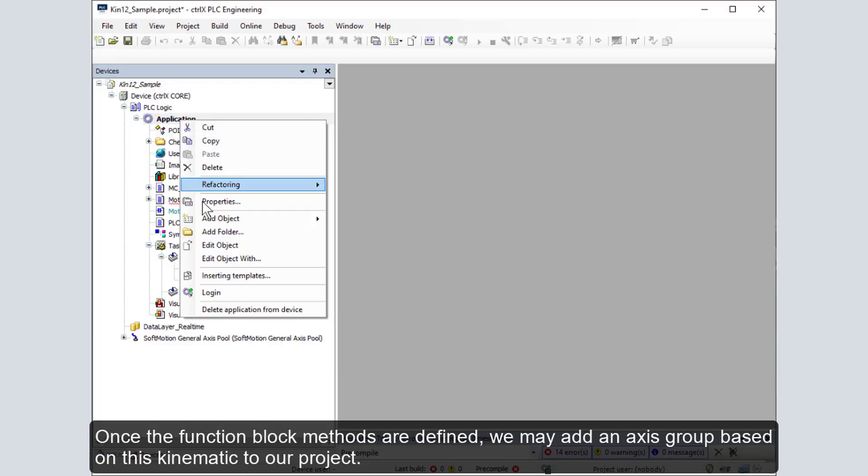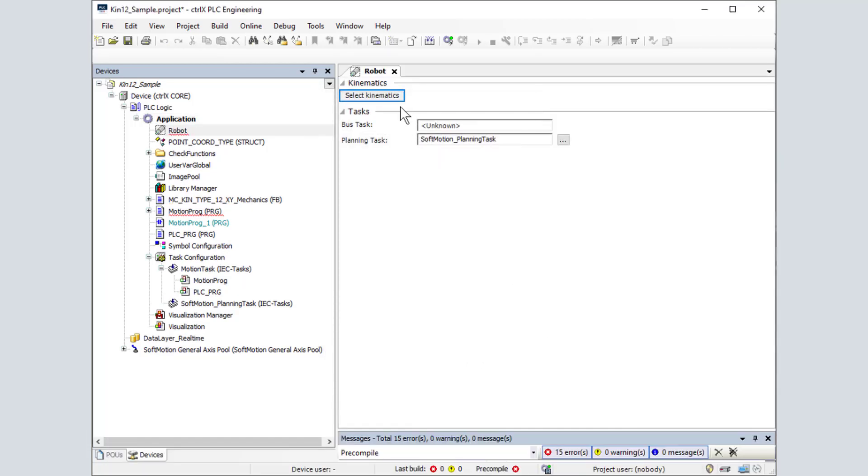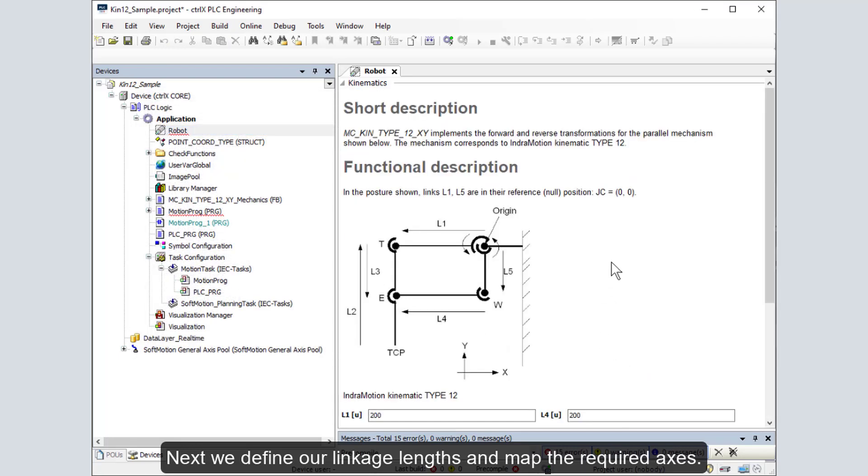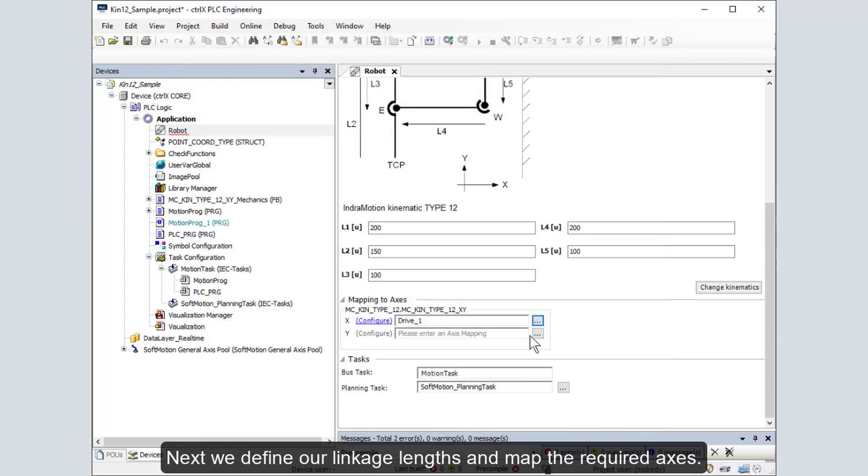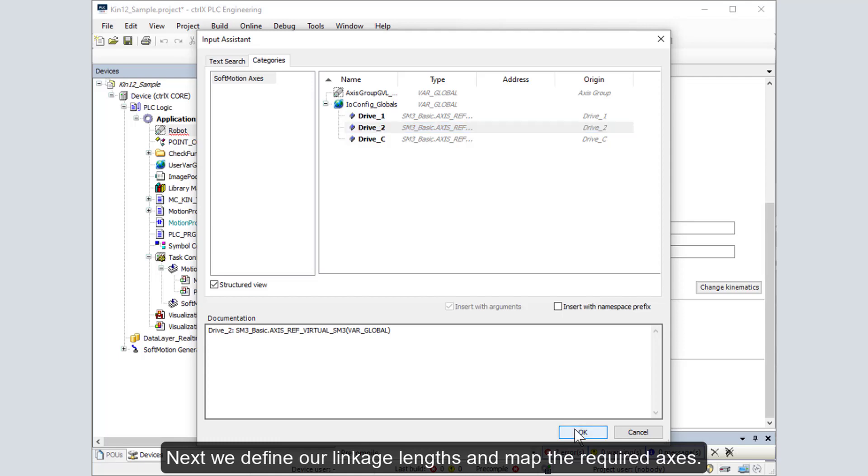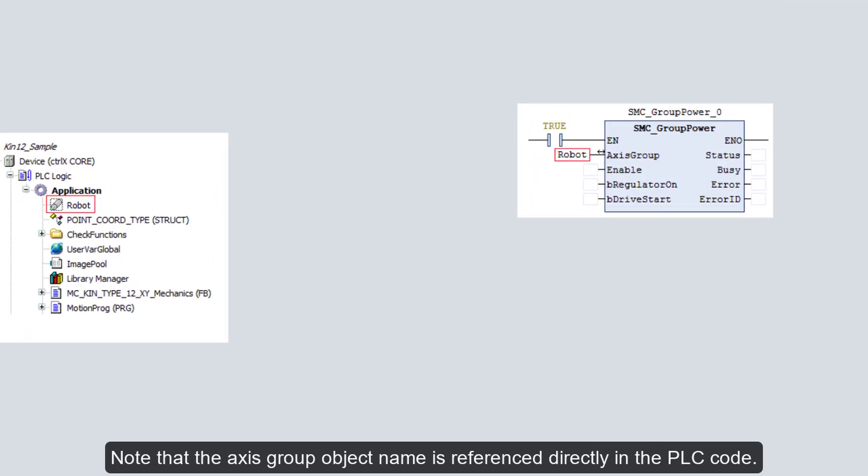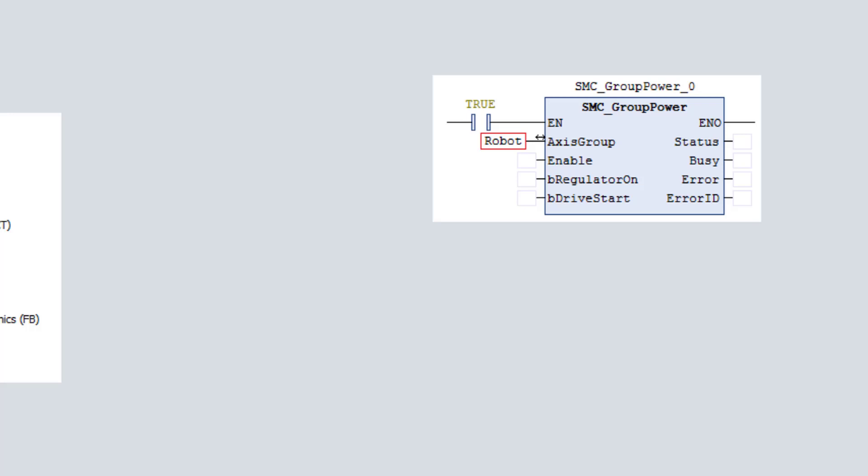Once the function block methods are defined, we may add an axis group based on our kinematic. First, we add an axis group object, then from the wizard, we select our kinematic. Next, we define our linkage length and map the required axes. Note that the axis group object name is referenced directly in the PLC code. The user is not required to instantiate the function block separately in the PLC application or register it explicitly.